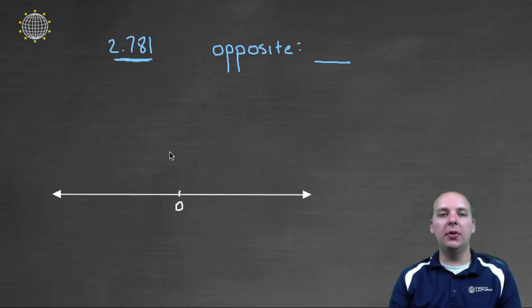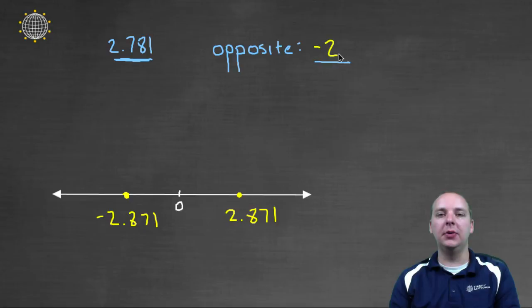Let's quickly run through these last two. Even if you have a decimal, let's call it 2.781, then the opposite would simply be negative 2.781, because it's on the other side of zero.